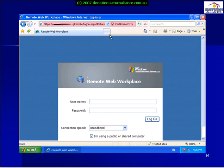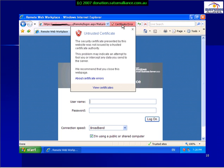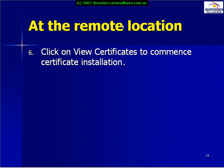You'll see up at the top that the address bar is red and there is something that denotes a certificate error. The first thing we need to do is click on the certificate error and install the server certificate on our workstation. Once we do this we'll no longer be prompted with that initial warning screen. To do this we simply click on the certificate error, then select View Certificates to commence the installation of the certificate.